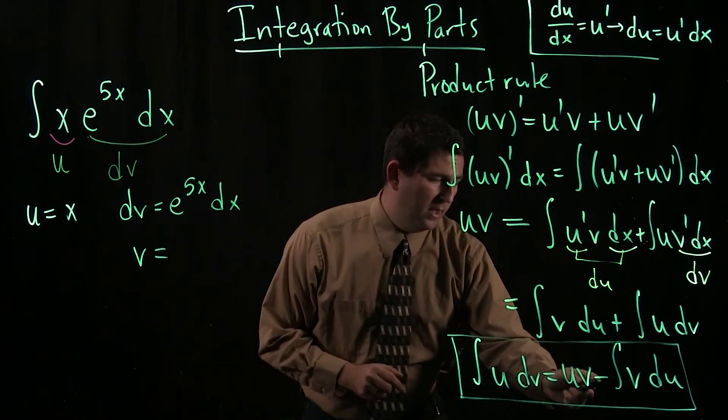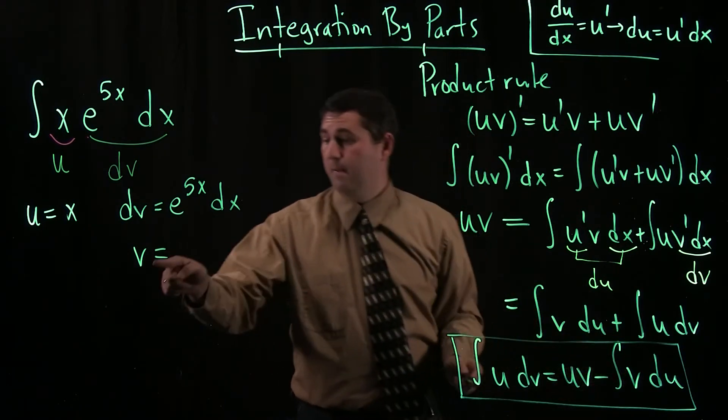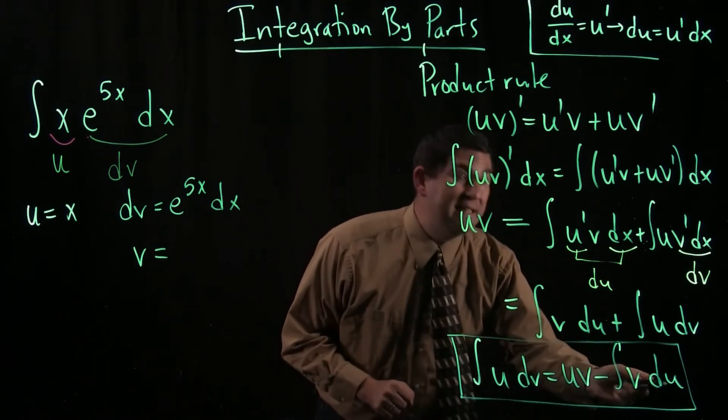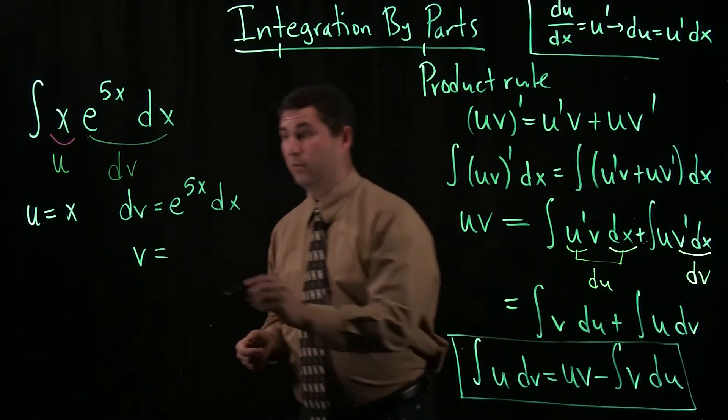What else do I need? I need minus. Okay, that's easy. An antiderivative of v. Hey, I'm going to figure out v. And I need du. I only have u, so I need to find du still.